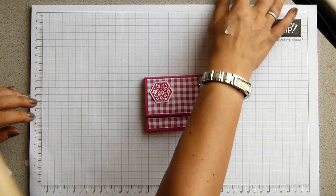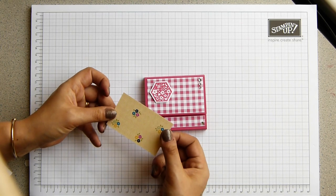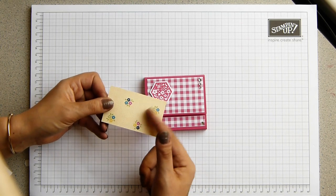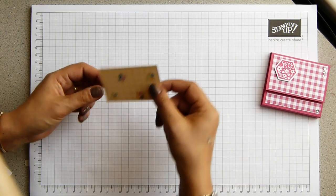But actually, what I'm going to use is the opposite side of the paper. So this will give me a Sew Saffron version. So if I put that to one side, bring in my Simply Scored scoring tool.